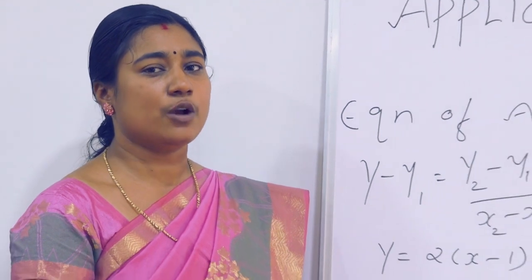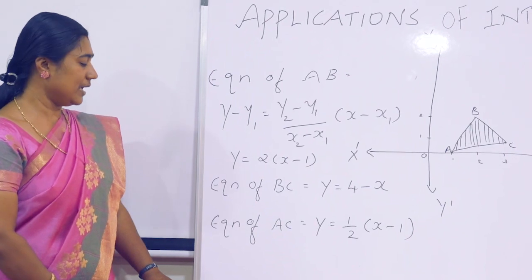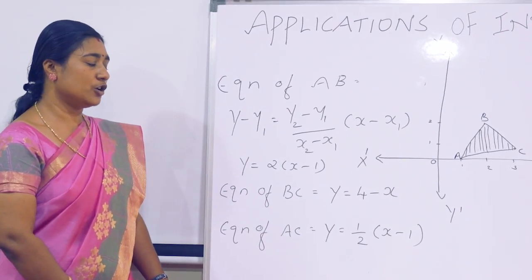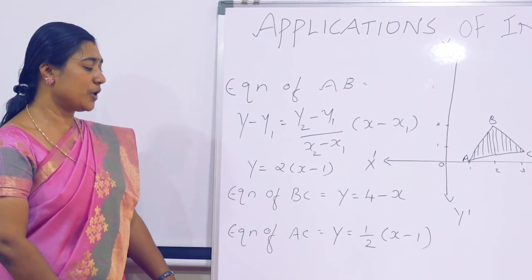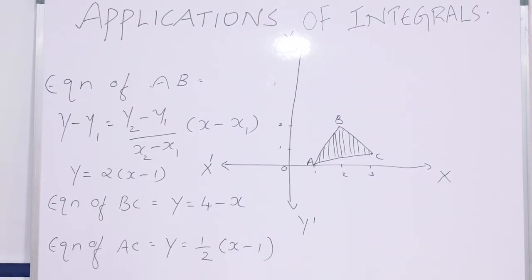So, y equals 2 times (x minus 1). Similarly, equation of BC equals y equals 4 minus x, and equation of AC equals y equals half x minus 1.